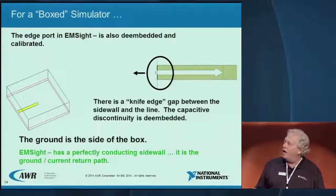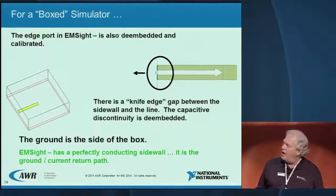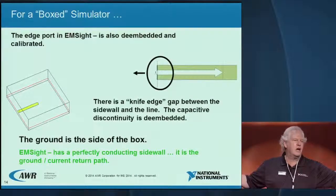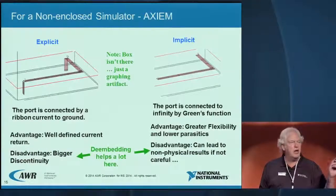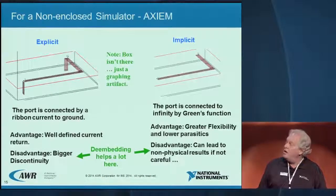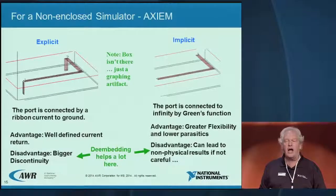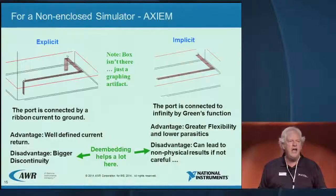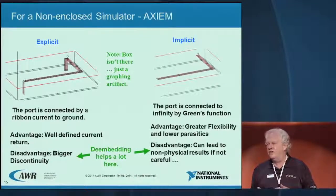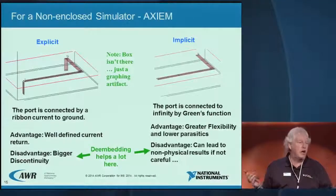In our non-box simulator with no wall — like Axiom — we have two choices. We can use a ground strap: the current comes up the strap, so the ground is the bottom of the board. Or there's an implicit port: the current comes out but came from somewhere — the ground is at infinity. Now, if you're an EM theorist that sounds fine, but if you're in your lab and someone says 'your ground's at infinity,' you should be concerned. Everybody has a ground. In a 3D simulator, using a quasi-TEM wave port in our Analyst product, the return current is on the inside of the outer conductor — that's your ground. Know where the ground of your ports is.